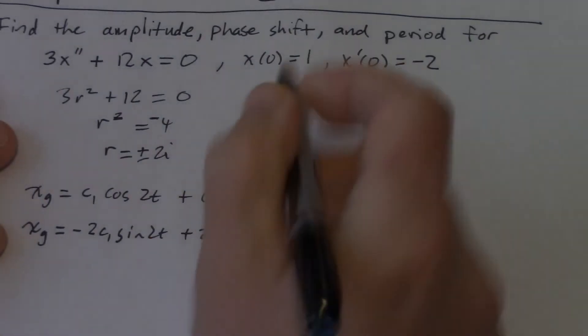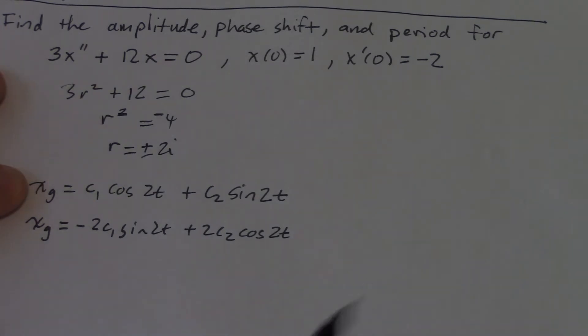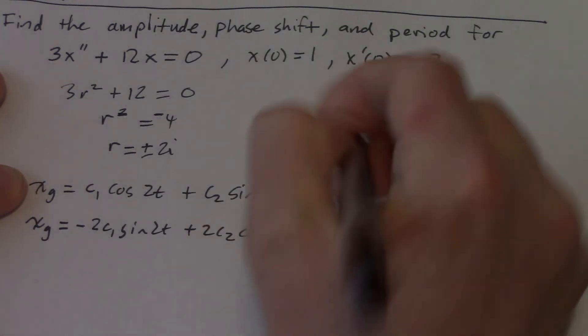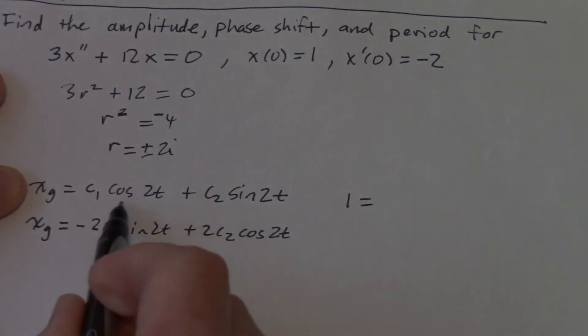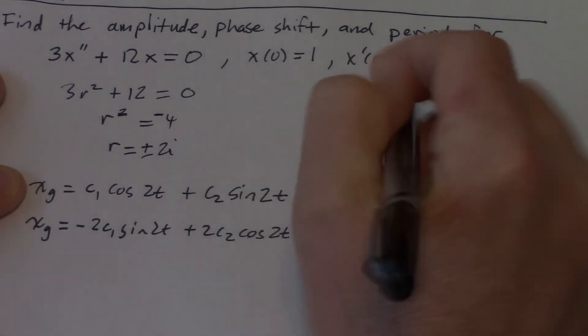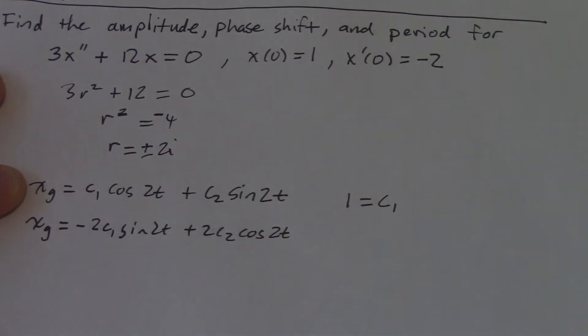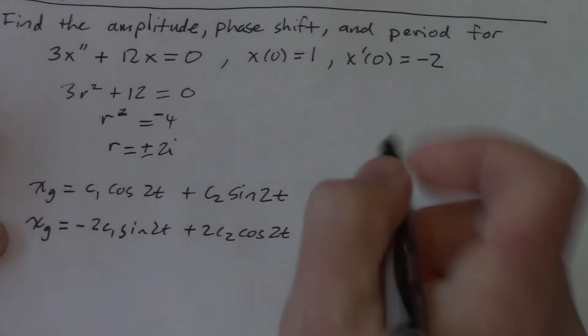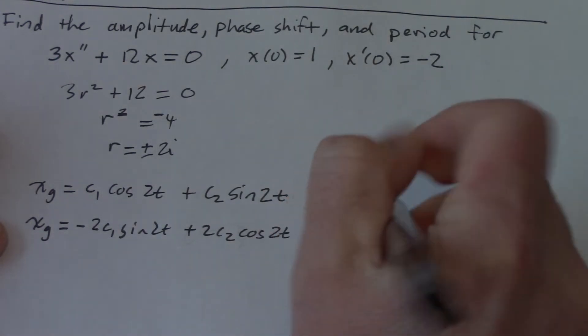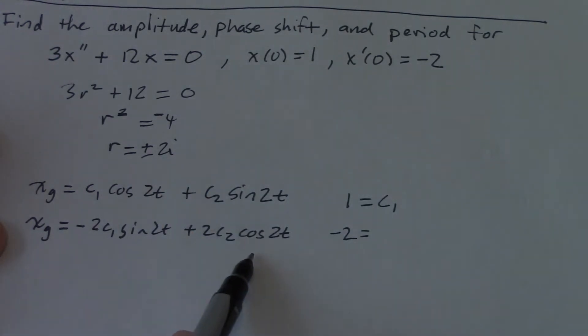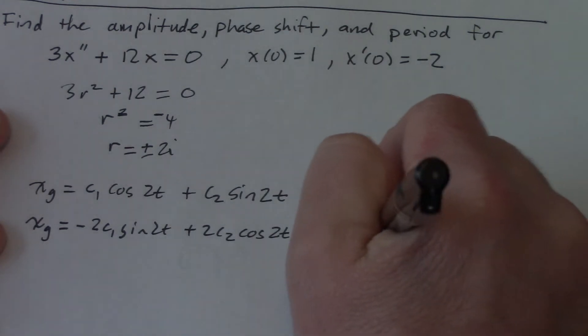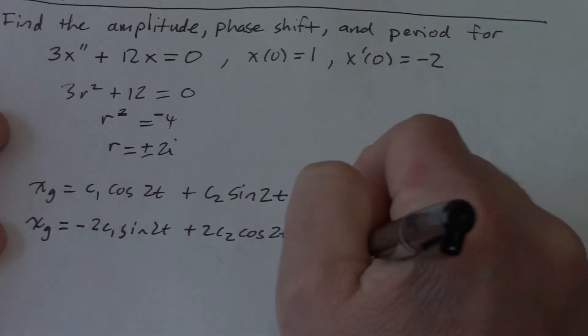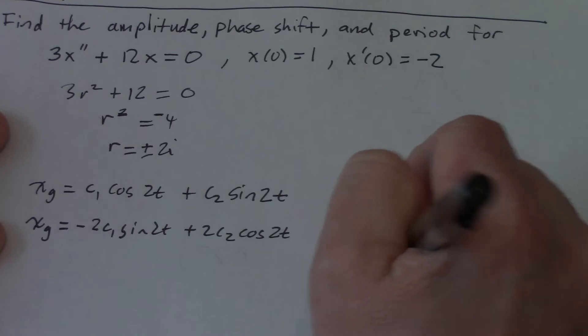So the derivative of that would be minus 2C1 sine 2t plus 2C2 cosine 2t. And using my initial condition, so in the top equation here, if x of 0 is 1, then 1 cosine is going to be 1, sine is going to be 0. So 1 is C1. And the second equation, negative 2, sine 0, cosine 1, is equal to 2C2.